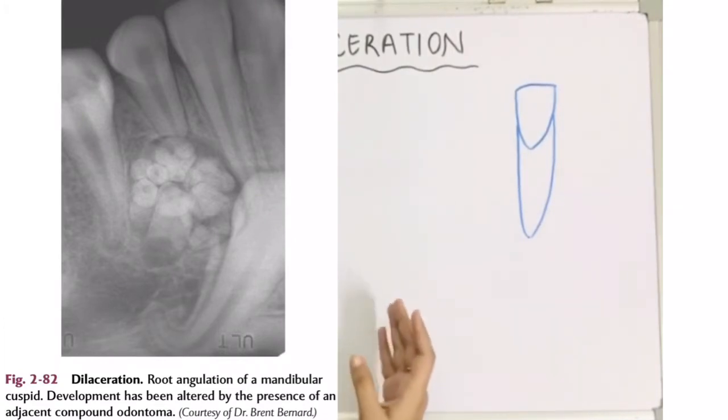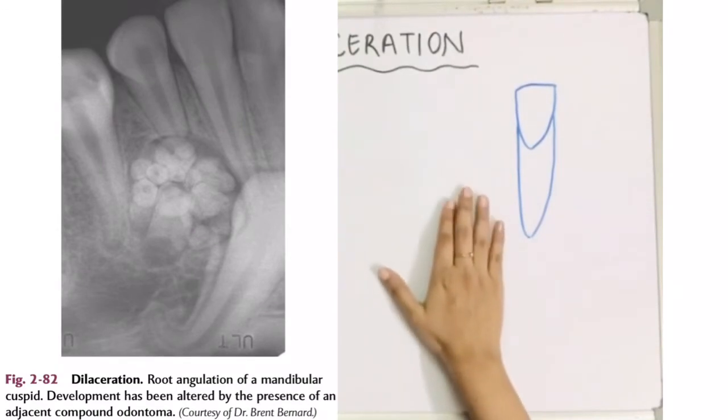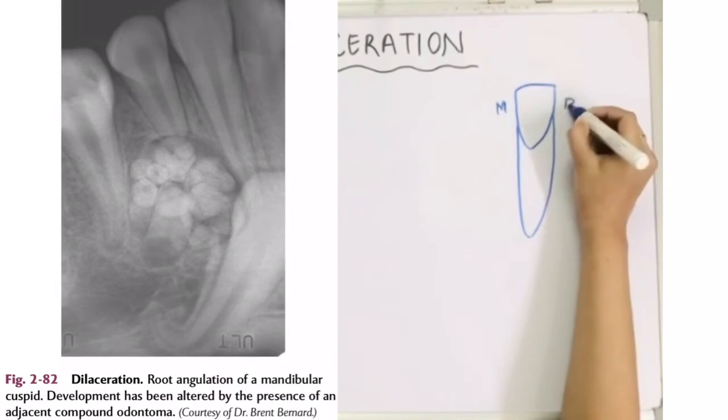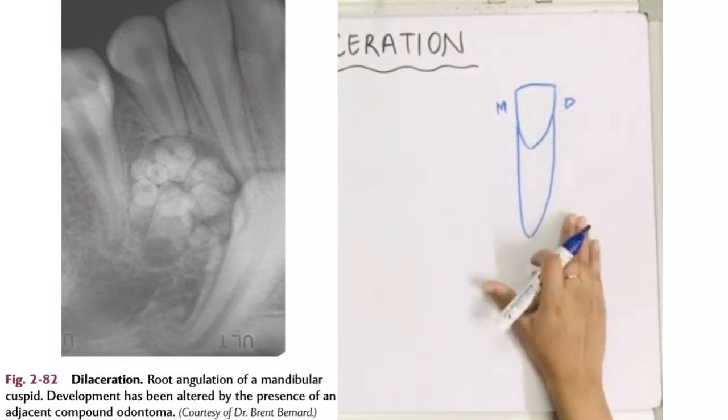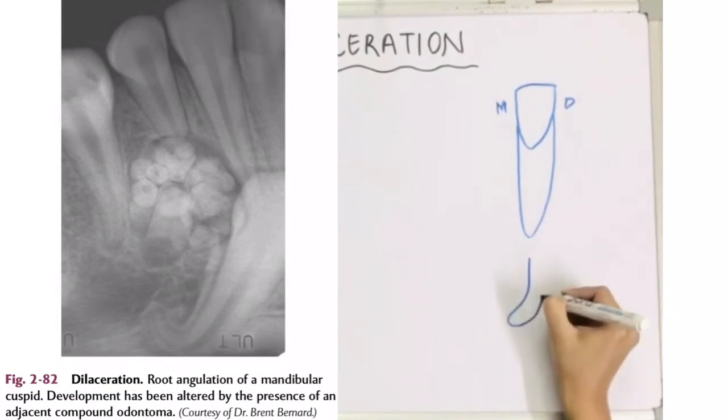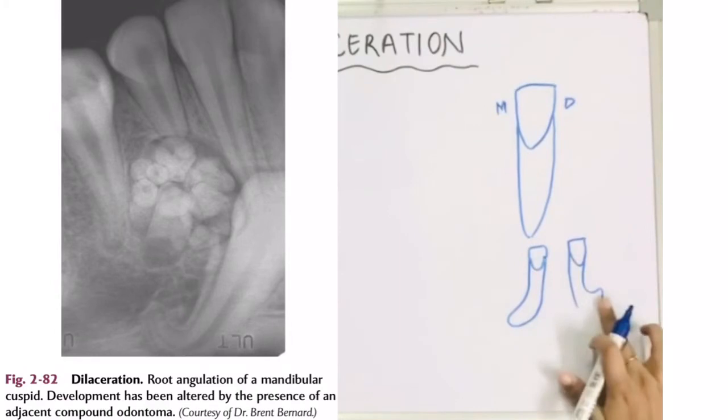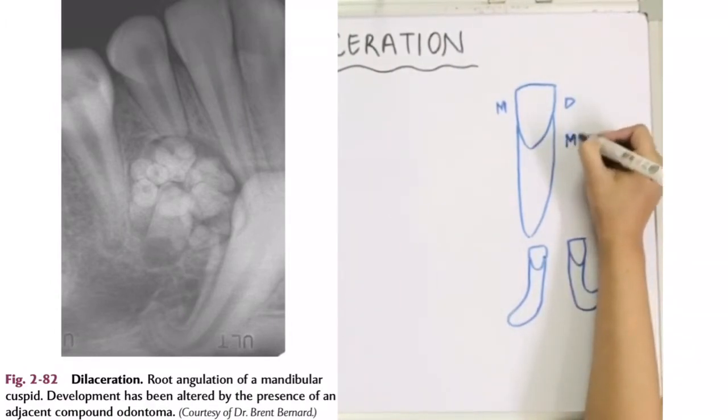Now see, if we talk about this angulation, if this is the mesial and this is the distal surface of the tooth, then this angulation either could be angulated mesially, or it could be angulated distally. There could be distal angulation of the root. Along with that, the angulation could be buccal or lingual.